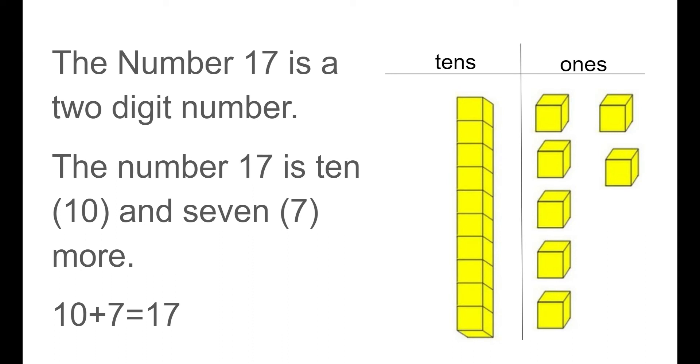So we see we have one stick in the tens column. We have one group of 10. And then in the ones column we have 7 cubes, 7 ones by themselves. So we have one group of 10 and 7 ones to make 17.